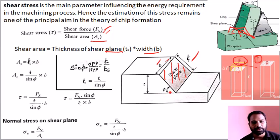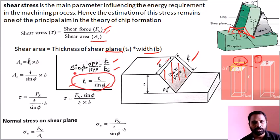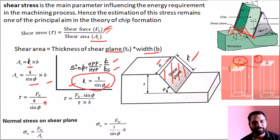We know the shear angle. Using the basic trigonometric rule: sin(φ) equals T divided by Ts. Therefore, Ts equals T divided by sin(φ). So the shear area is T divided by sin(φ), multiplied by width B.